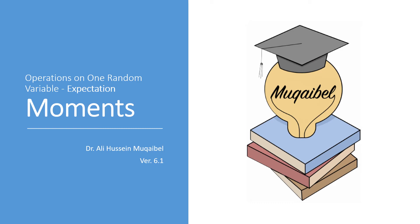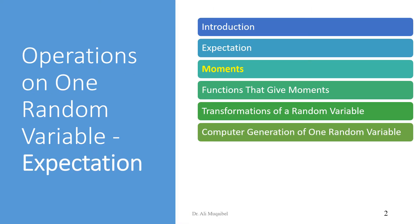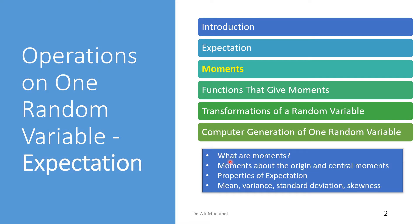Welcome. We're doing operations on one random variable: expectation. Our focus now is on the moments, so the title of the lecture is 'Moments.' We have covered the introduction and defined expectation. Now we'll go over moments — specifically moments about the origin and central moments — and look at properties of expectation, focusing on mean, variance, standard deviation, and skewness as examples.